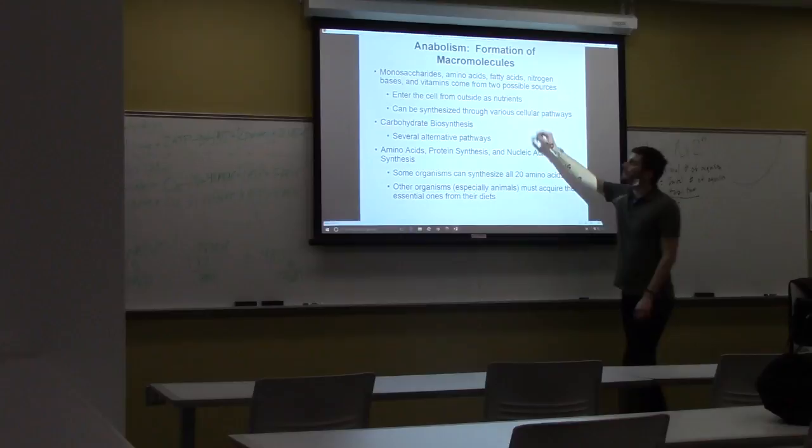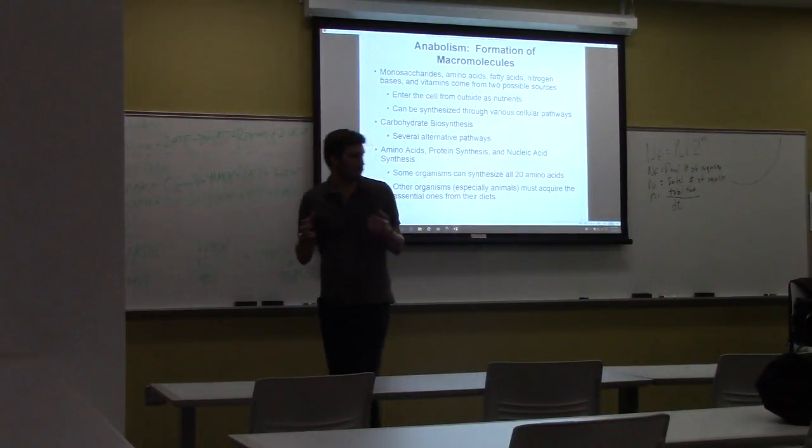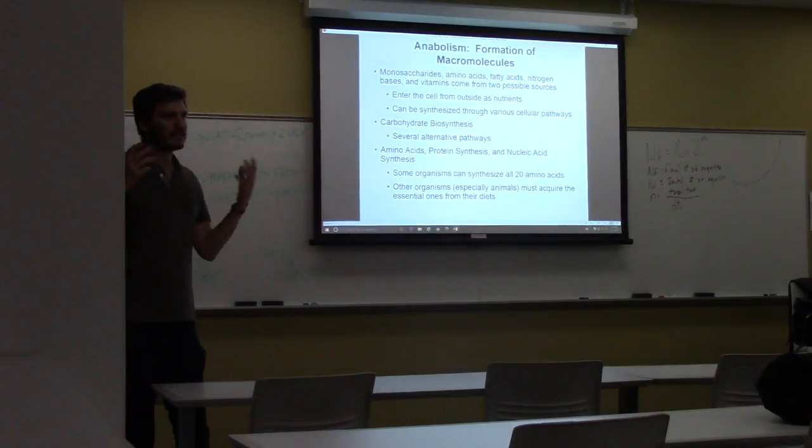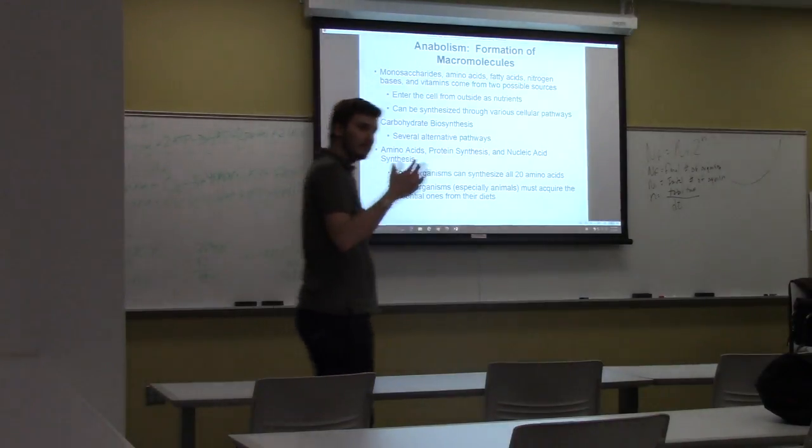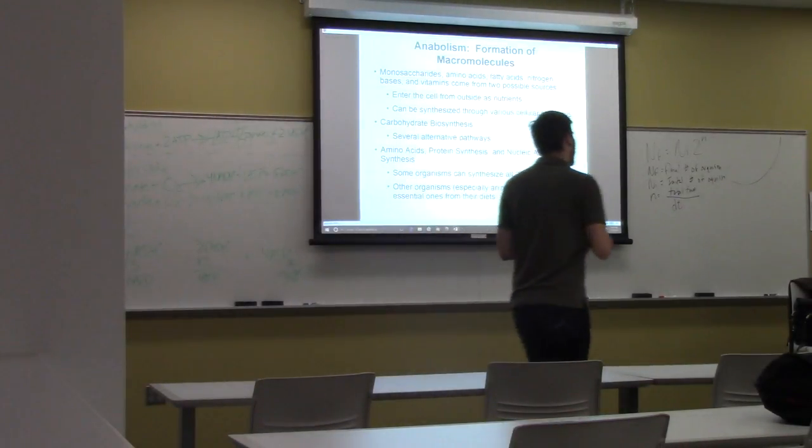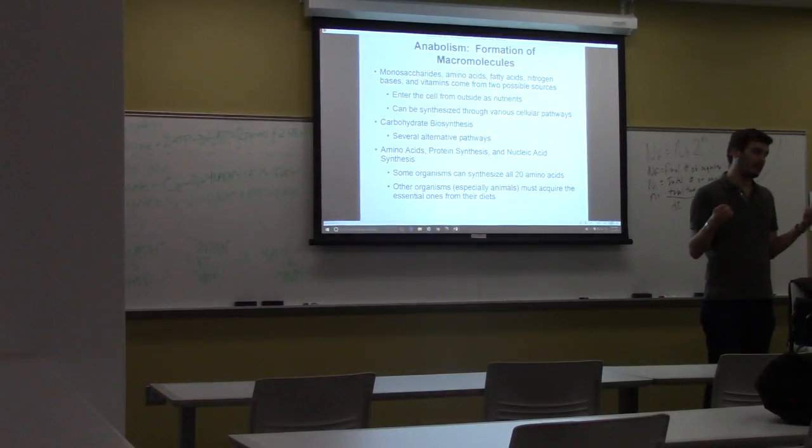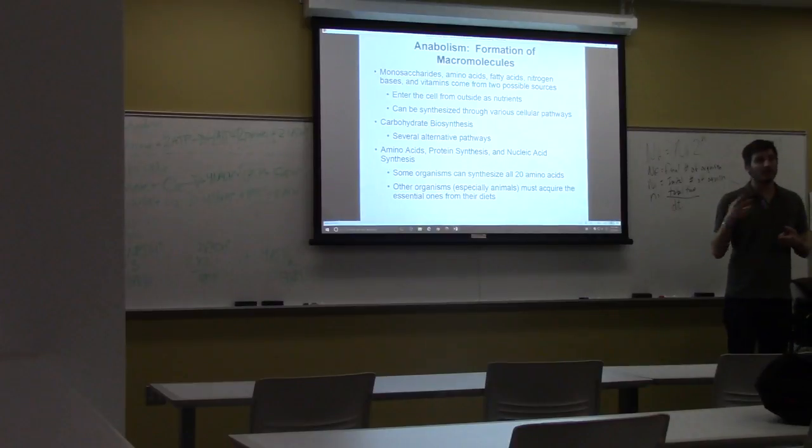And then, anabolism, this is where you take smaller molecules, stick them together, and make larger molecules. And again, you do this over and over and over again, until eventually you get a cell. And then, when the cell gets to completion, it makes itself, it then will make more and more copies of things, and this eventually allows it to divide. So, anabolism is used for making the cell, but also for division.